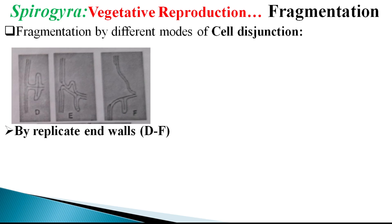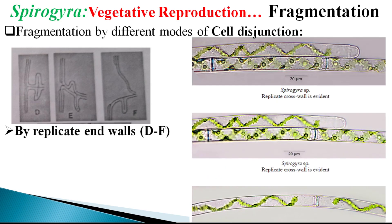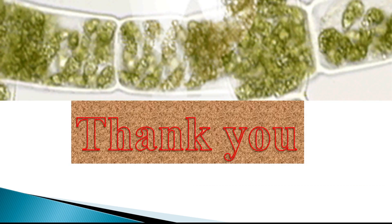These are the replicate forms of end walls. Such replicate end walls get protruded into the adjacent cell, and the resulting increased pressure leads to breaking the septum. In this way, cells get separated. I hope you have understood this concept of vegetative reproduction by means of fragmentation.